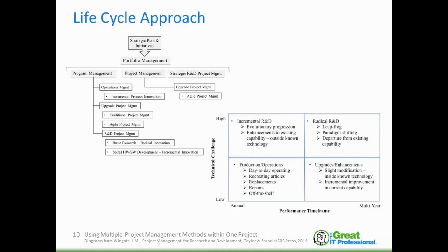The diagram on the right provides a model that helps you assess where a project or elements of a project might fall, based on the technical challenges and expected performance timeframes likely to be affected. For example, a project with significant technical challenges and a longer expected performance timeframe would likely include elements departing from existing capability, possibly incorporating R&D or early development. Having a perspective on what is driving your initiatives helps provide context for your project structure and chosen management methods.